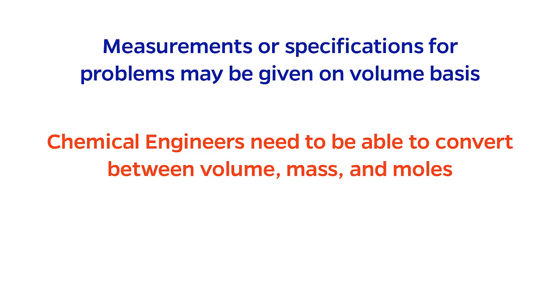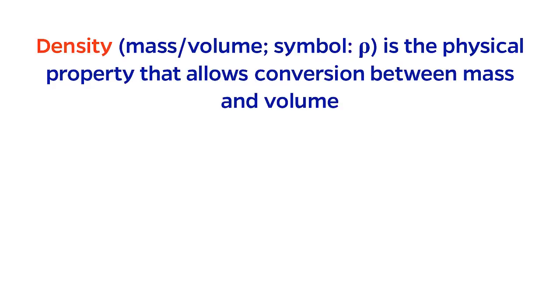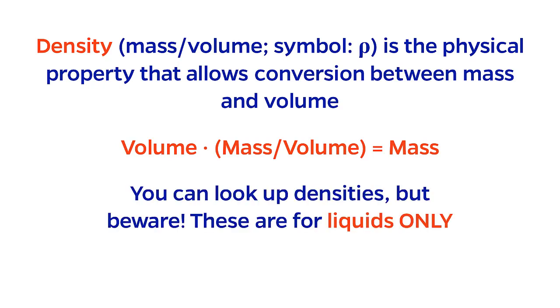The property that allows conversion between mass and volume is the density, which is the mass per unit volume and given the symbol of the Greek letter rho. Using the commandments of units that I covered in the last episode, we can multiply the volume and the density to yield mass. You can look up densities of common chemicals, but beware.